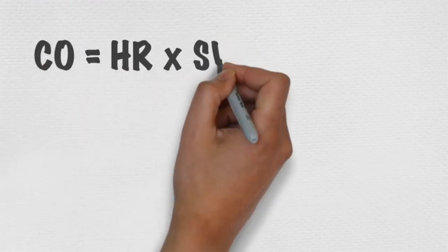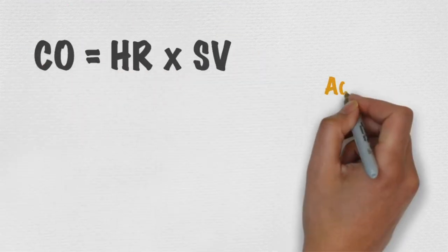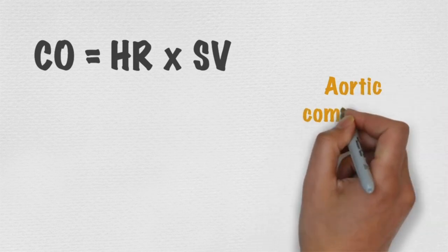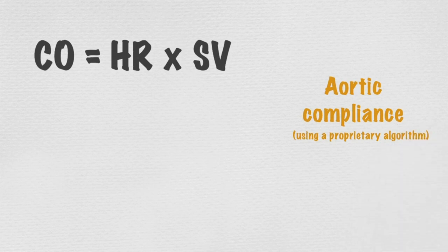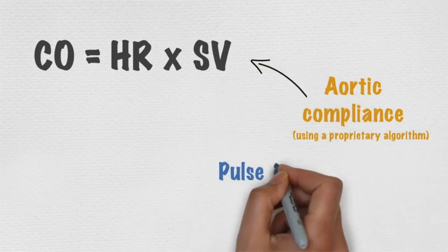The technology uses two variables to calculate stroke volume: the aortic compliance, which is calculated using a proprietary algorithm, and the pulse pressure at the point of calibration.